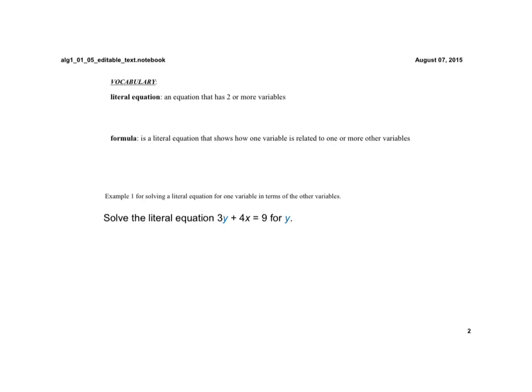Our first example of a literal equation: we're going to solve the equation 3y + 4x = 9. We're going to rewrite it so it's y equals. Anything that does not contain a y is considered now just a constant term. So we have to get rid of the 4x.